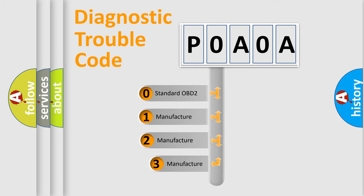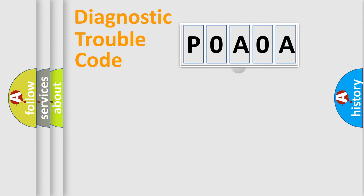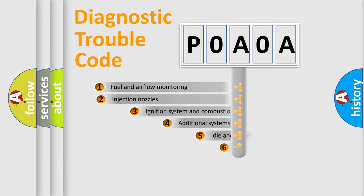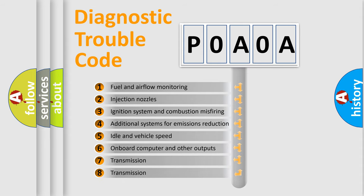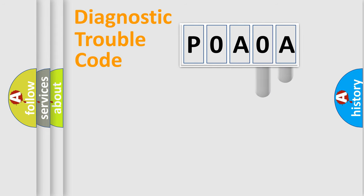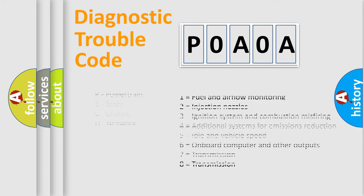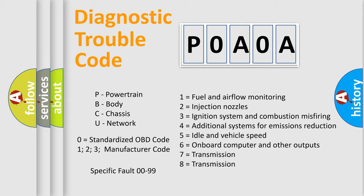If the second character is expressed as zero, it is a standardized error. In the case of numbers 1, 2, or 3, it is a more manufacturer-specific expression of the car-specific error. The third character specifies a subset of errors. The distribution shown is valid only for the standardized DTC code. Only the last two characters define the specific fault of the group. Let's not forget that such a division is valid only if the second character code is expressed by the number zero.